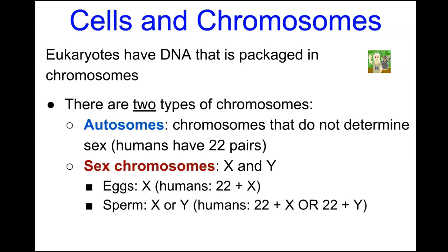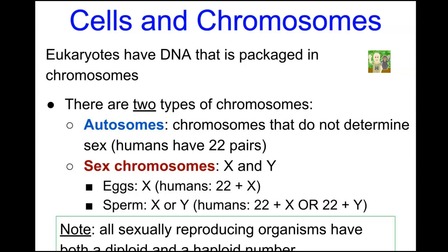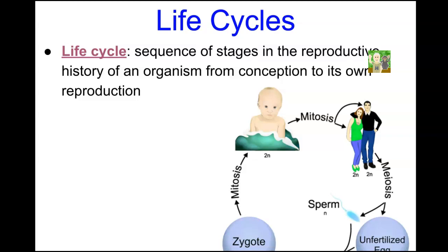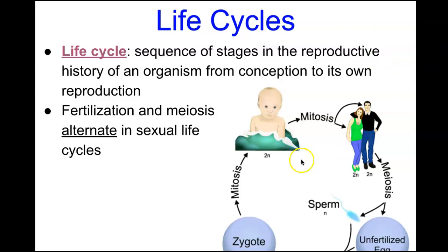All sexually reproducing organisms have both diploid and haploid numbers, which we can see when looking at the life cycles of organisms. Here is the life cycle of a human being — a sequence of stages in the reproductive history of an organism from conception to its own reproductive period. The newborn is a diploid organism.